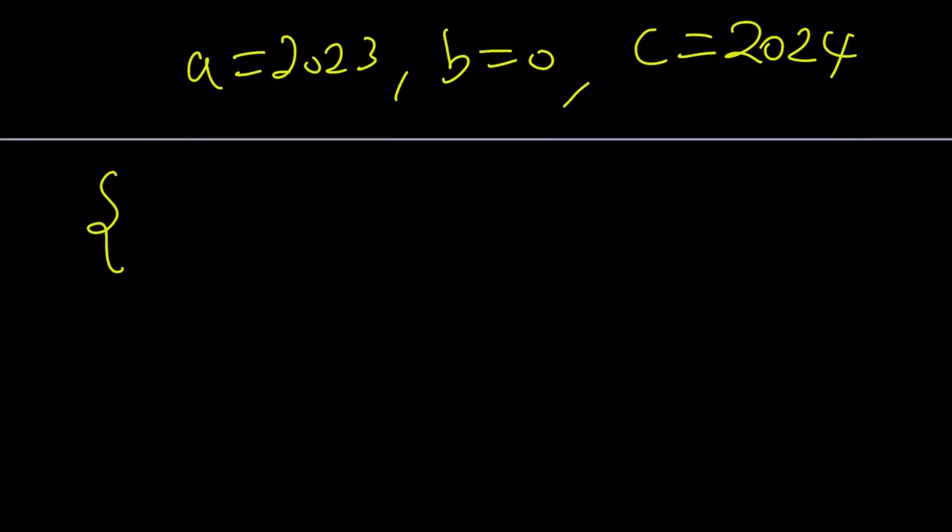So, here's our solutions. It has ordered triples. 675, 2, 674. And that second one is the one that contains the years and 0. 2023, 0, 2024.